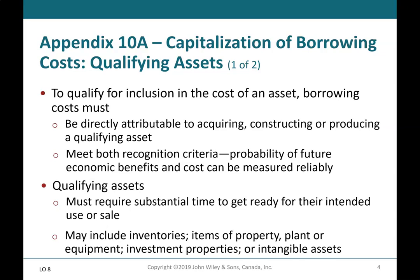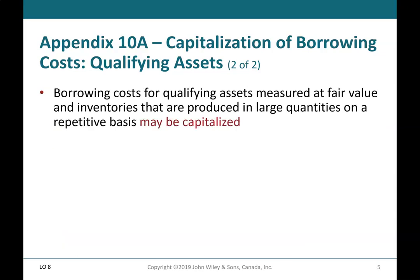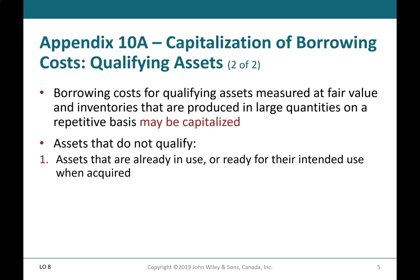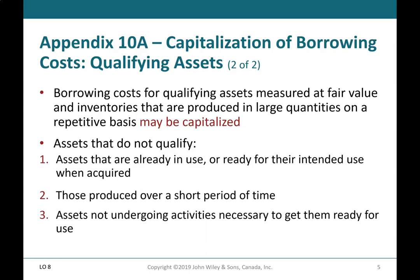Qualifying assets may include inventories, items of property, plant, or equipment, investment properties, or intangible assets. Borrowing costs for qualifying assets measured at fair value and inventories produced in large quantities on a repetitive basis may be capitalized. Assets that do not qualify include: assets already in use or ready for their intended use when acquired, those produced over a short period of time, and assets not undergoing activities necessary to get them ready for use.